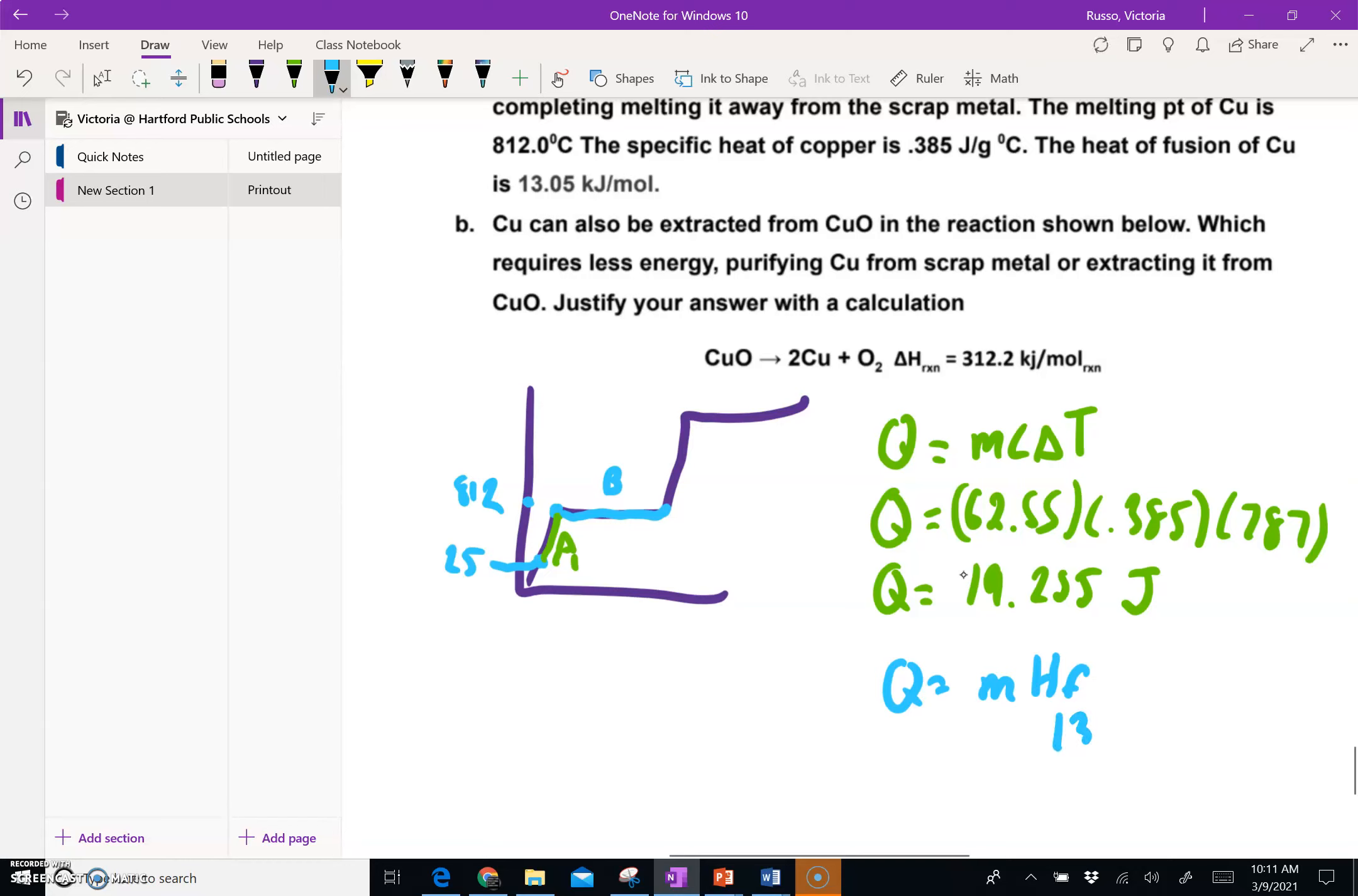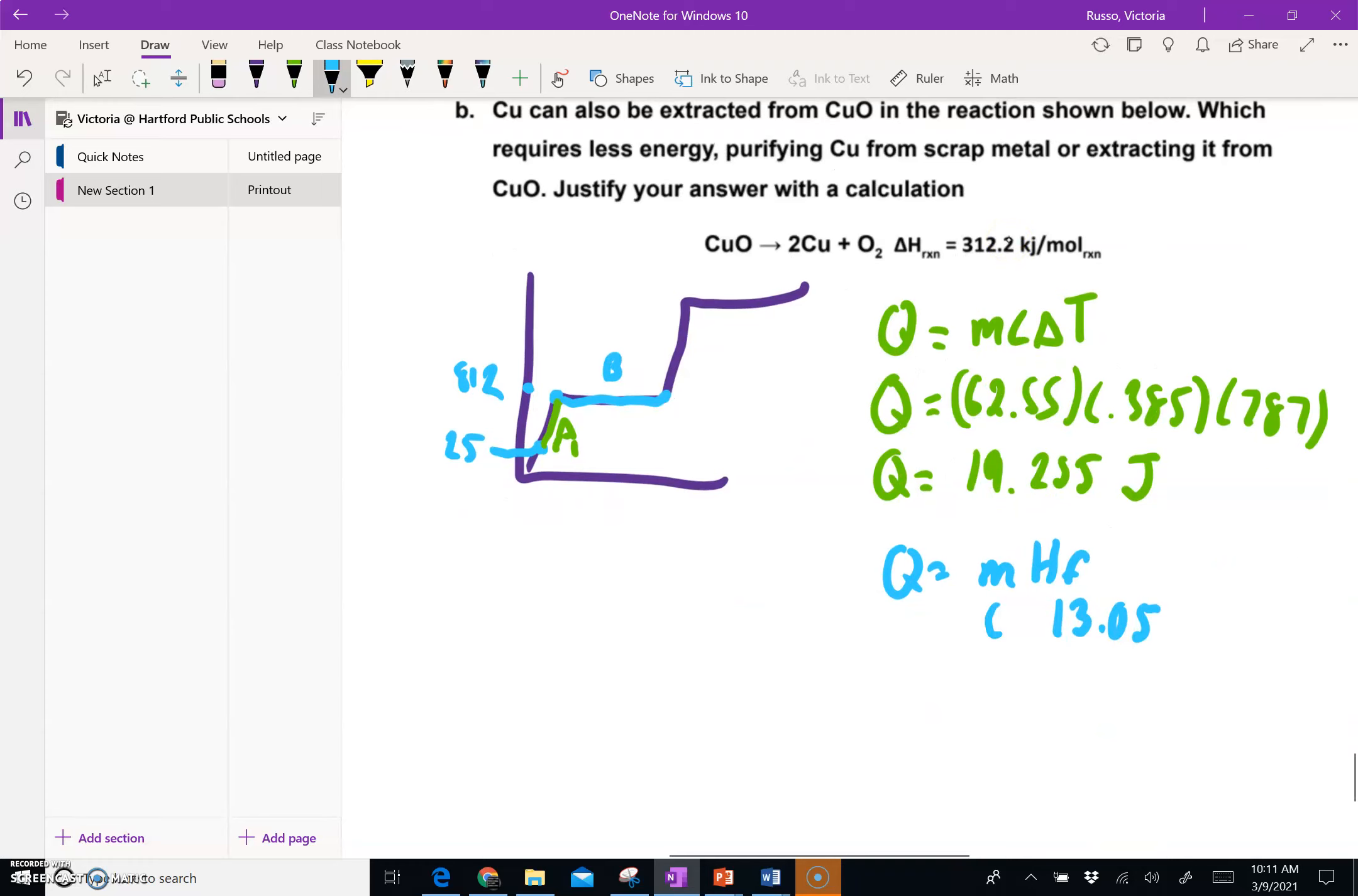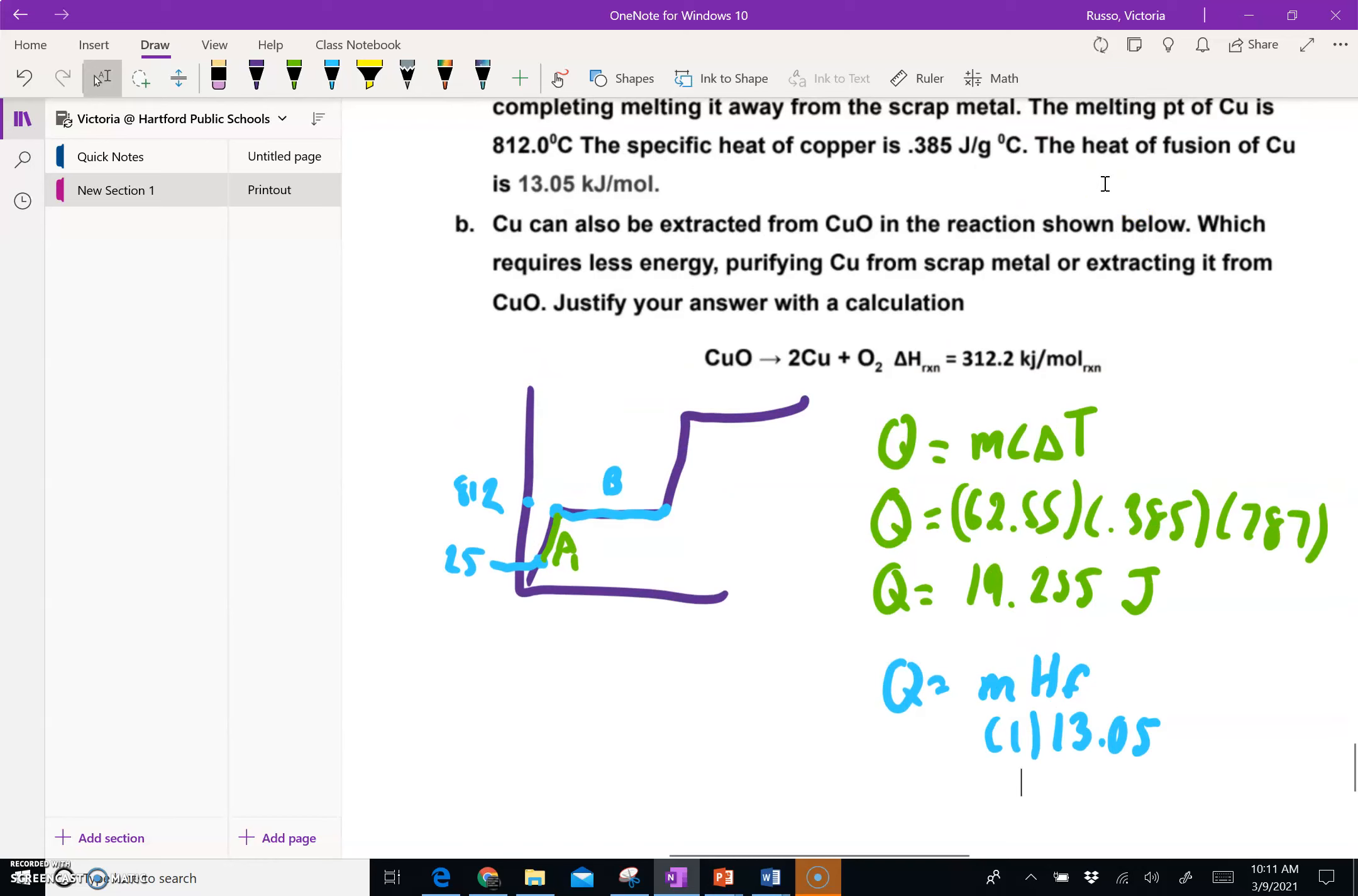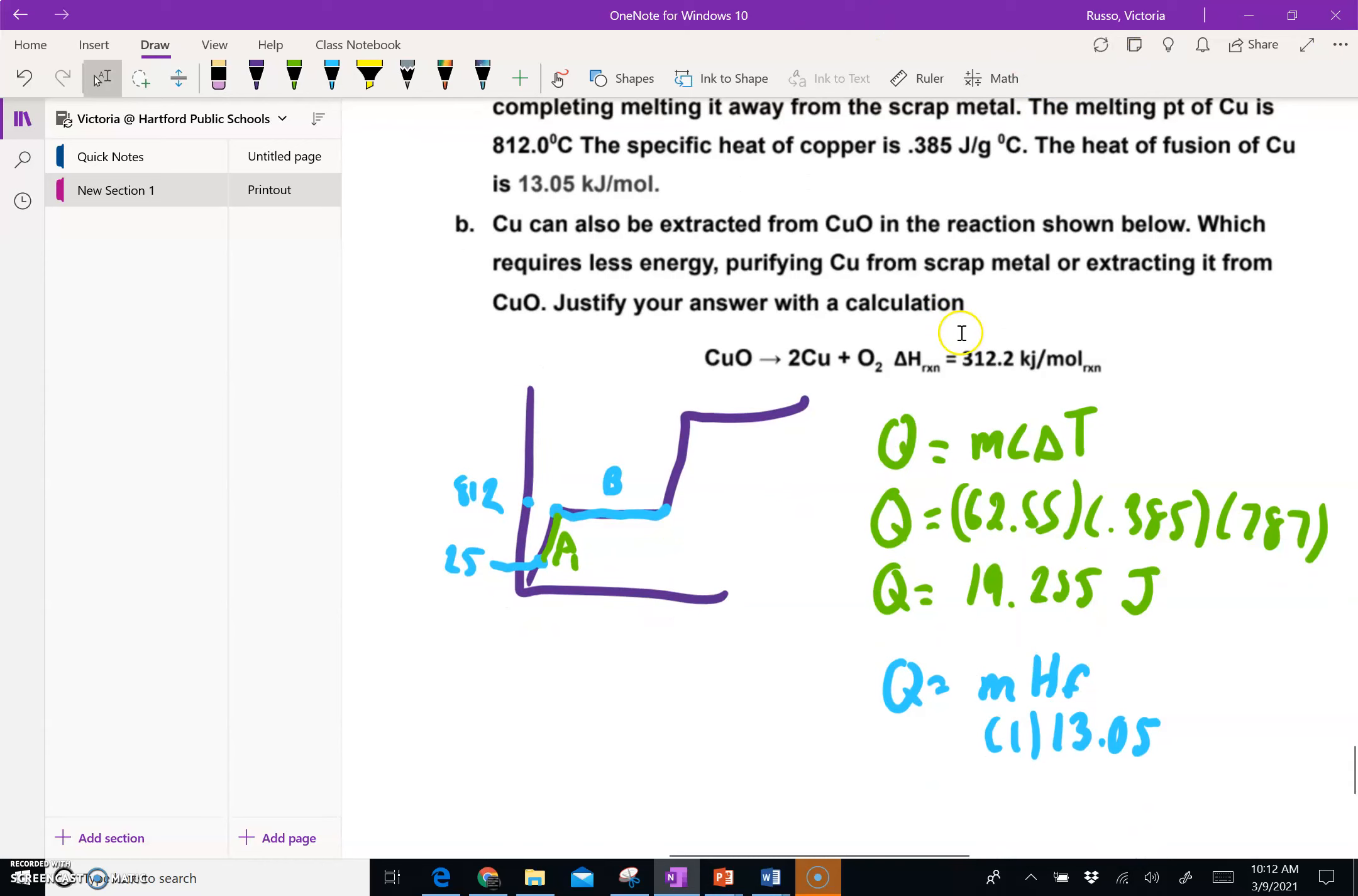One thing you have to be careful about here is the units. The heat of fusion is given in kilojoules per mole. So we can't multiply by the mass, we have to multiply by the moles. But we know that they want it of one mole, so the moles here are just one. If the heat of fusion was given in kilojoules per gram then you would have to multiply by the mass, but because it's given in kilojoules per mole we multiply by the moles and the problem tells us that they want it per one mole. And this math is easy, it's 13.05.